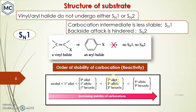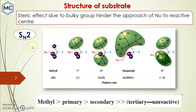The full SN1 reactivity order is: tertiary allylic/benzylic > tertiary alkyl or secondary allylic/secondary benzylic > secondary alkyl > primary allylic > primary alkyl, with methyl being the least stable or least reactive. Next, we consider SN2 reaction substrate effects.